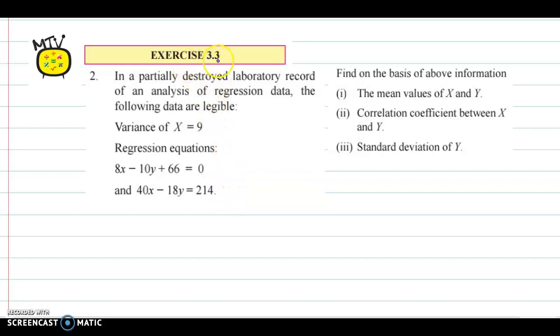Hello and welcome back to Exercise 3.3, second question we will discuss. In a partially destroyed laboratory record of an analysis of regression data, the following data are legible. First, variance of x is 9 and these are two regression equations. Again, type is not mentioned - which is y on x, which is x on y, this is not mentioned.